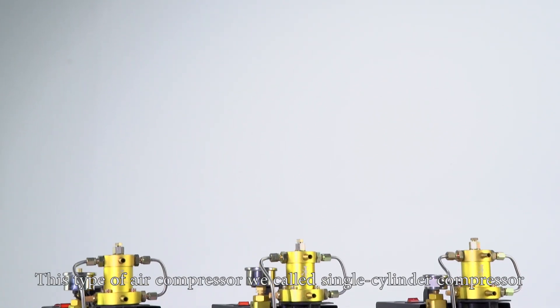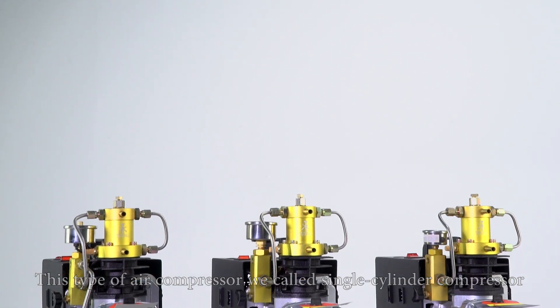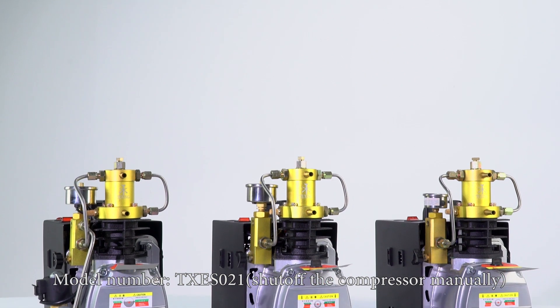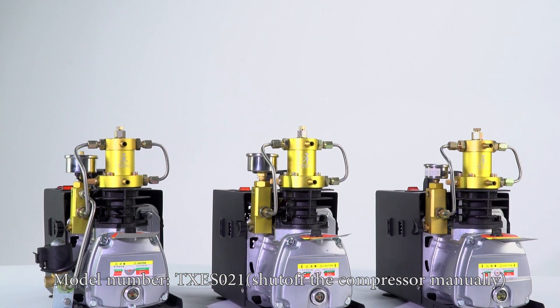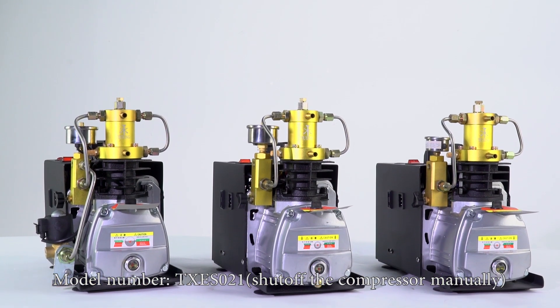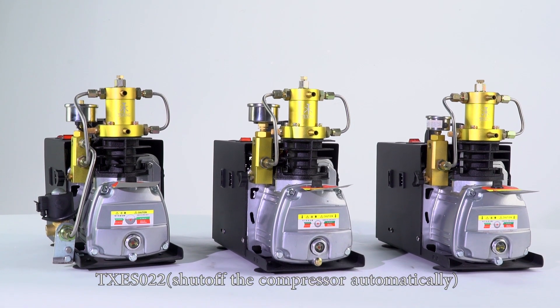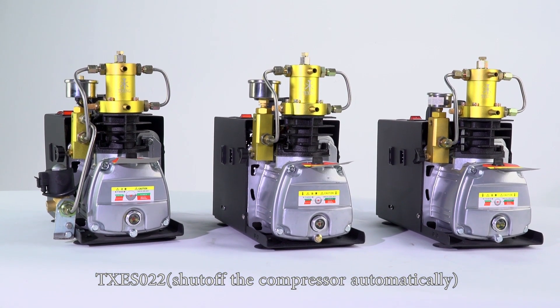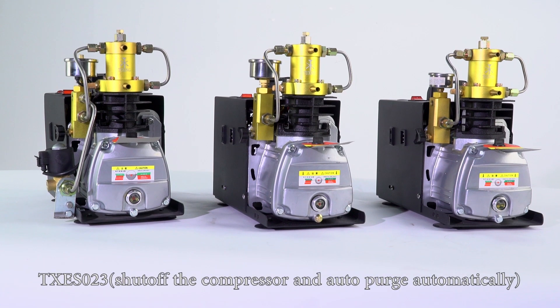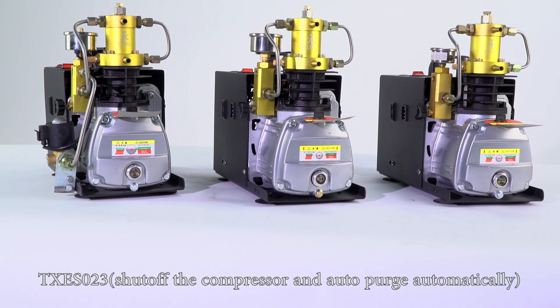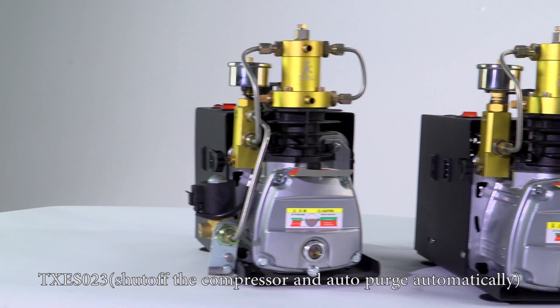This type of air compressor we call single cylinder compressor. Model number TXES021 shuts off the compressor manually. TXES022 shuts off the compressor automatically. TXES023 shuts off the compressor and auto purge automatically.